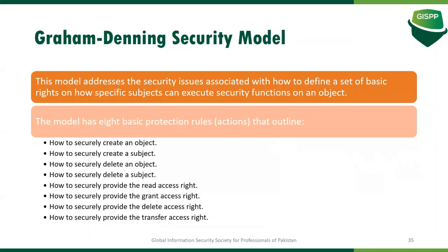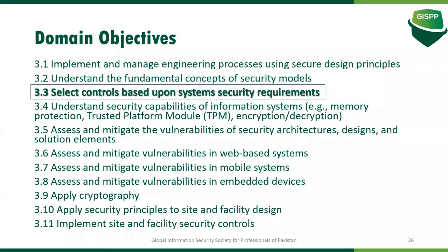The Graham-Denning security model is based on eight controls: how to securely create and delete subjects and objects, how to provide read access to an object, how to grant access, how to delete access, and how to transfer access. These fundamental security models are only reference models — they are not physically present anywhere. Based on those references, many different operating systems and applications are developed and implement them.